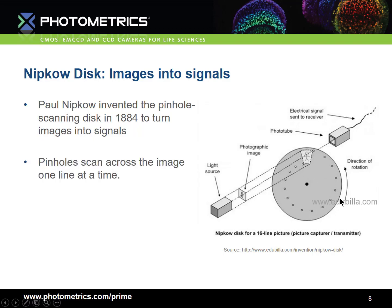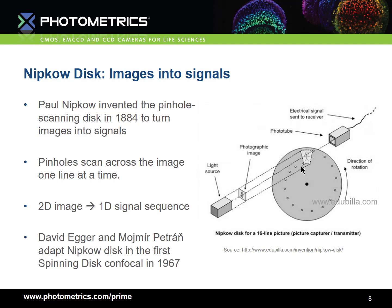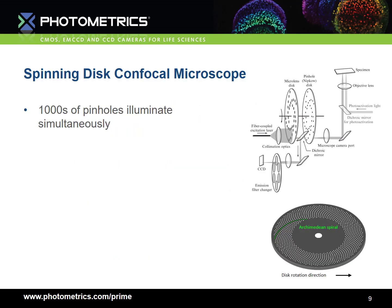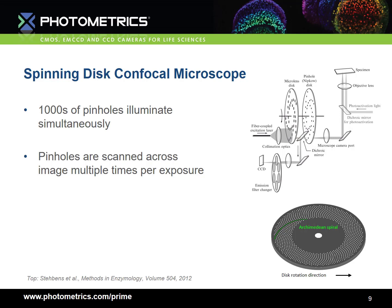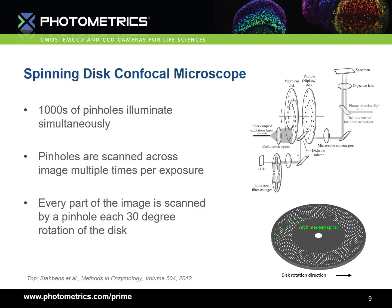Here, pinholes are arranged on a disk in an Archimedean spiral. As the disk rotates, pinholes scan across lines of the image, and the two-dimensional image is turned into a one-dimensional sequence of information. David Egger and Mojmir Petran later adapted the Nipkow disk into the first spinning disk confocal microscope in 1967. The spinning disk confocal microscope is based around the so-called Petran disk, where many Archimedean spirals are arranged on a single disk, and thousands of pinholes illuminate the sample simultaneously. These pinholes are typically scanned across the image multiple times per exposure, and every part of the image is scanned by a pinhole each 30 degree rotation of the disk.